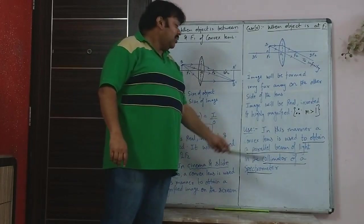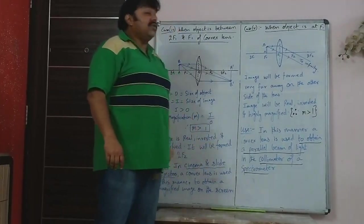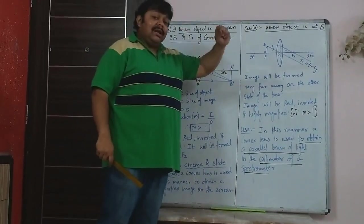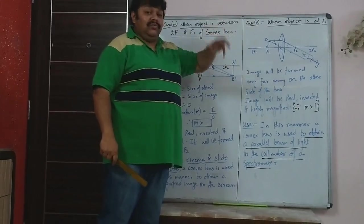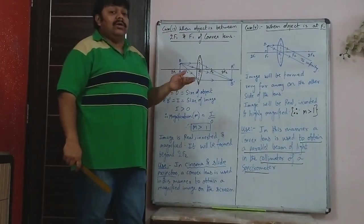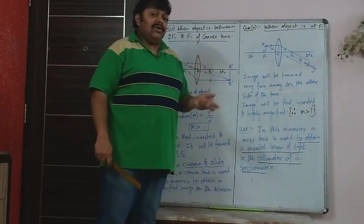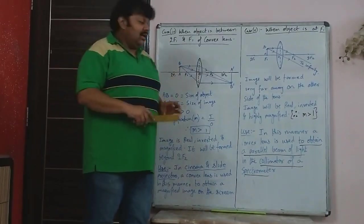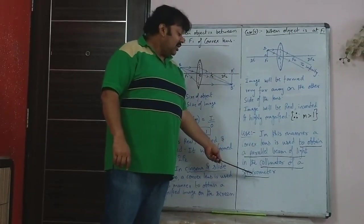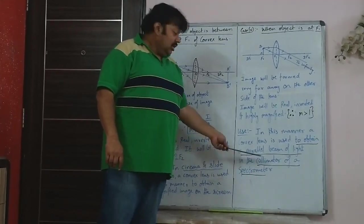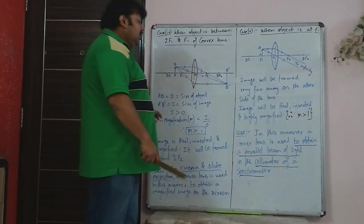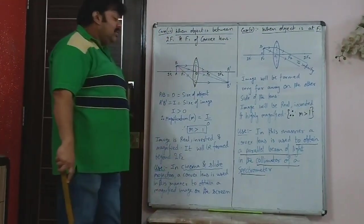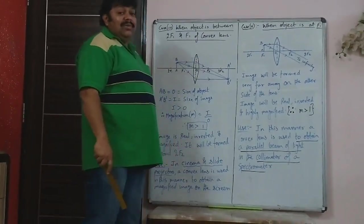A spectrometer is used to get a parallel beam of light to obtain the spectrum of visible light and the electromagnetic spectrum. The collimator is a part of the spectrometer. You use this position of the convex lens — object at F1 — to obtain a parallel beam of light in the collimator of a spectrometer. Now we have one case remaining in convex lens, and then both cases of concave lens.